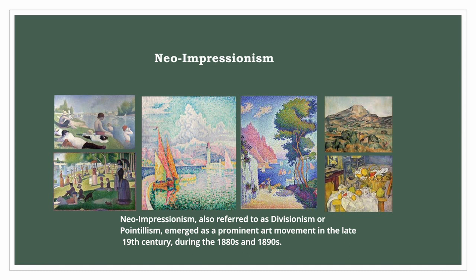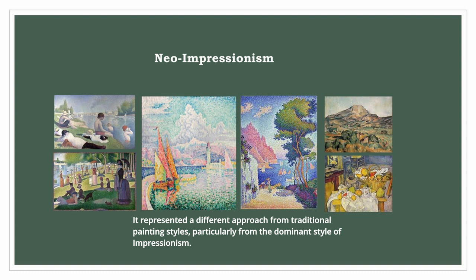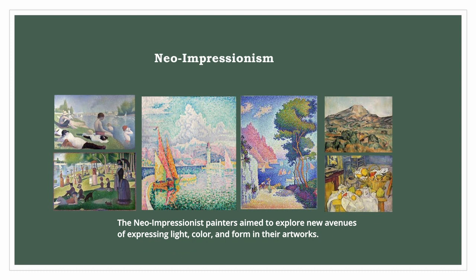Neo-Impressionism, also referred to as divisionism or pointillism, emerged as a prominent art movement in the late 19th century, during the 1880s and 1890s. It represented a different approach from traditional painting styles, particularly from the dominant style of Impressionism.